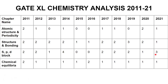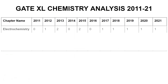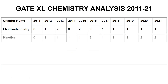Next we have Chemical Equilibrium — again a topic where at least one question is asked every year. Then next is Electrochemistry, one topic which has been asked most of the time. Clearing 2011, 2014, and 2016, the majority of the time it's been asked for one mark.